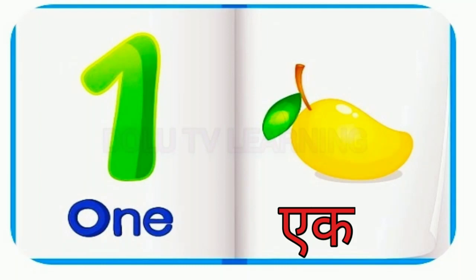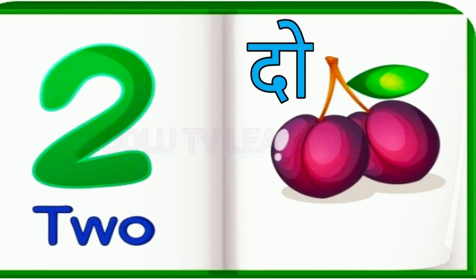1. O-N-E. 1 means egg. 2. T-W-O. 2 means dough.